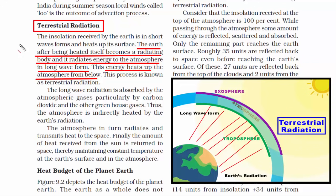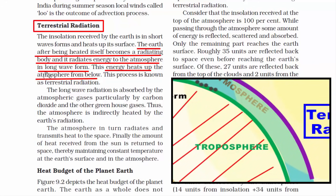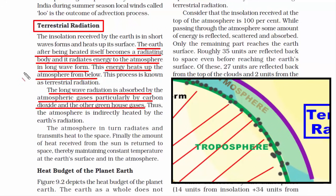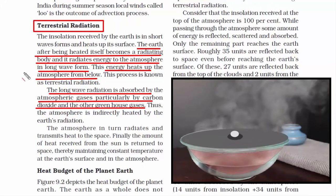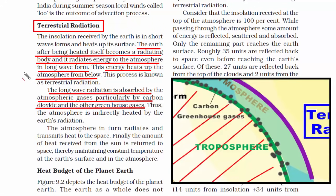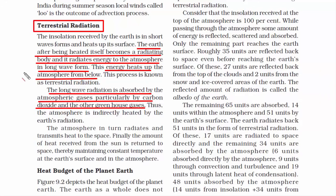As soon as the radiation touches the troposphere, the long-wave radiation is absorbed by atmospheric gases — particularly by carbon dioxide and other greenhouse gases like methane, nitrous oxide, ozone, etc. Think of it this way: if you cover a utensil of hot boiled water with a lid, it naturally increases the temperature inside. Similarly, if the atmosphere has a large percentage of carbon and other greenhouse gas molecules, it blocks the earth's heat from escaping to space — which is good to some extent because we need some heat. However, excessive heat increases global temperature, leading to global warming and climate change.